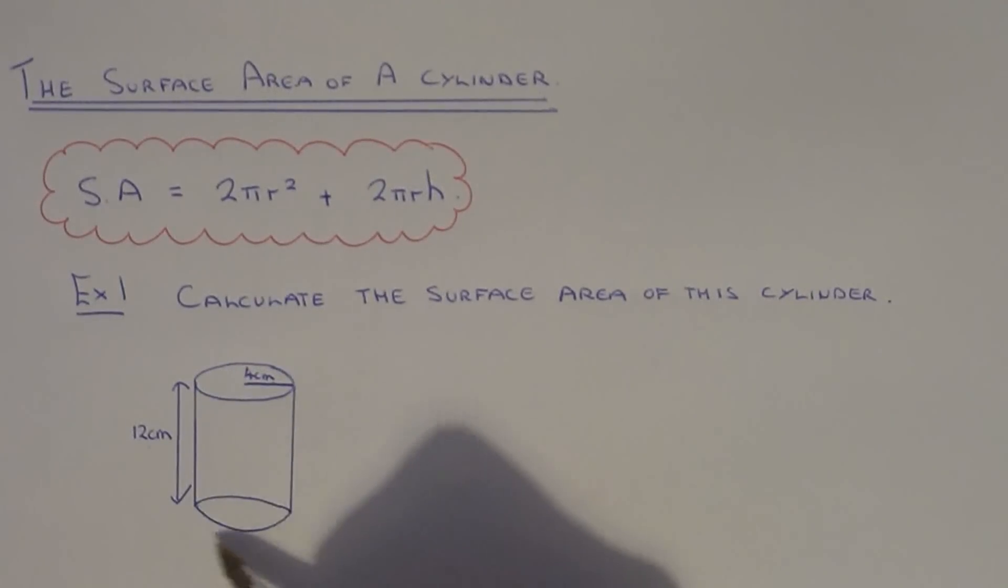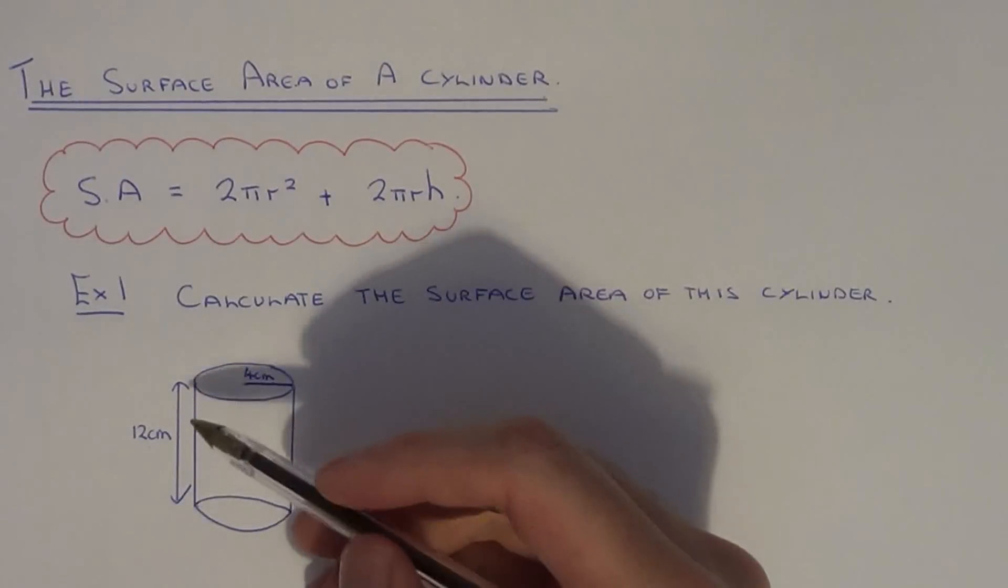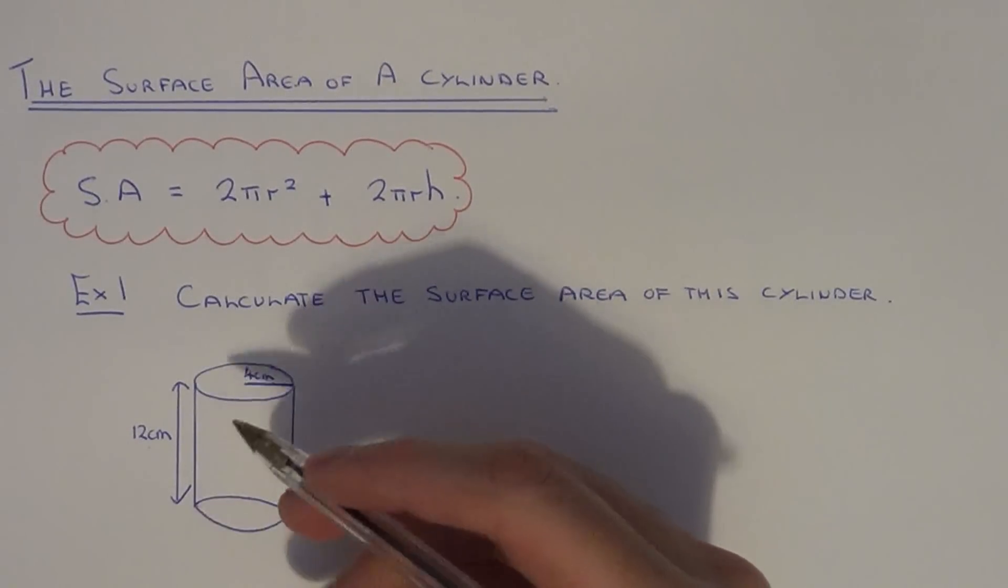So we've got to calculate the surface area of this cylinder. It has a radius of 4 centimeters and a height of 12 centimeters.